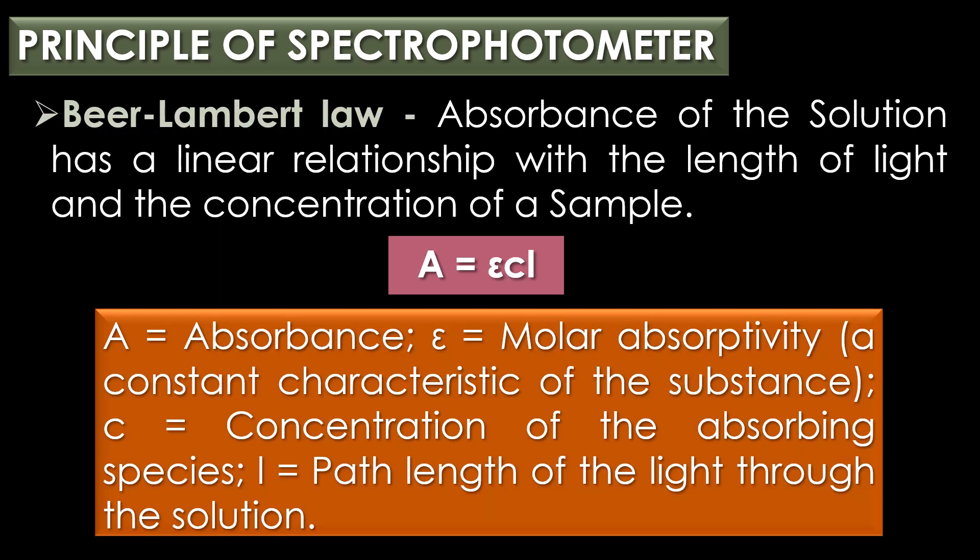A spectrophotometer is based on the Beer-Lambert's Law, which states that the absorbance of a solution has a linear relationship with the length of light path and the concentration of a sample. Mathematically it can be represented as A = εcl, where A is absorbance, ε (epsilon) represents the molar absorptivity — a constant characteristic of a substance — c represents the concentration of the absorbing species, and l represents the path length of the light through the solution.